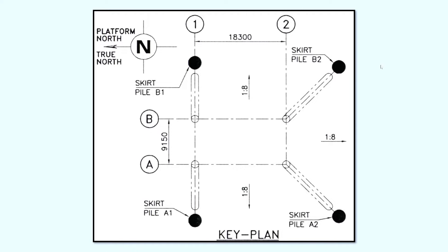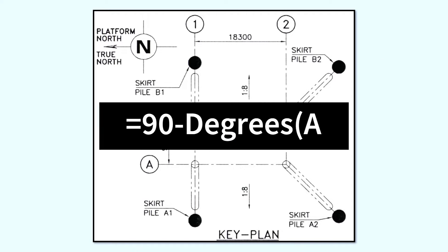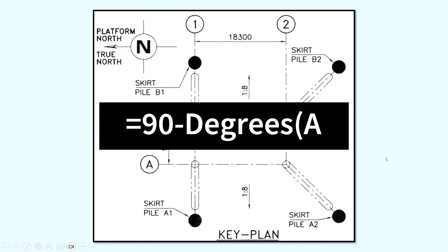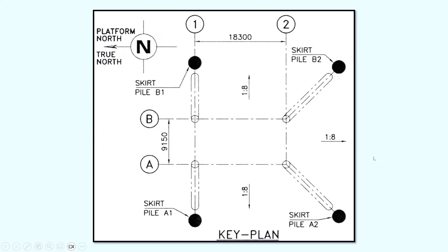Open an Excel sheet. Write this equation on an empty cell: equals 90 minus degrees, open bracket, atan open bracket 8, close bracket, close bracket. And press enter. And that will give you the slant angle of the leg.